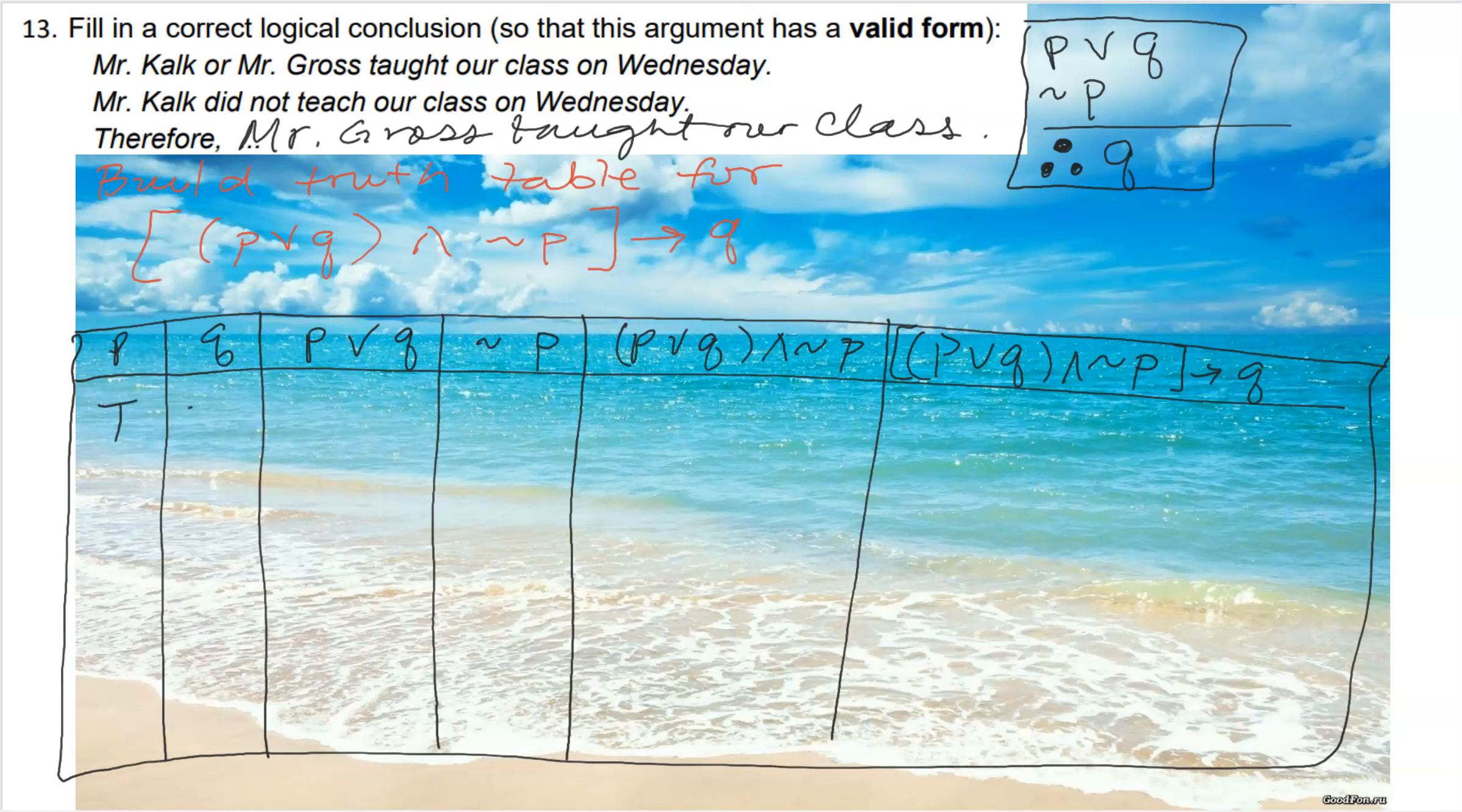We have true true, true false, false true, false false. Or means this, that, or both, so as long as one true value in there this statement is true, otherwise it's false. Not P is the opposite of P, so false false true true.